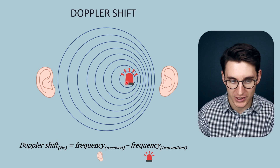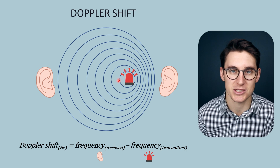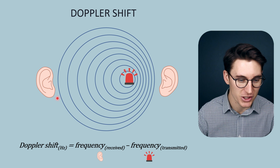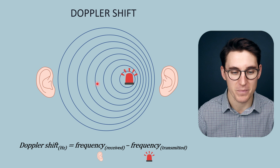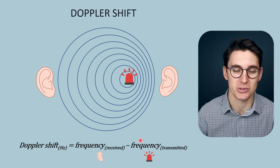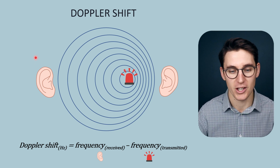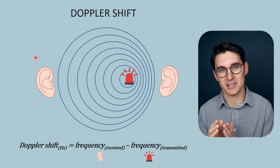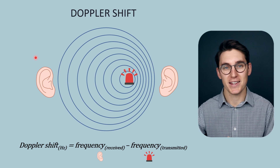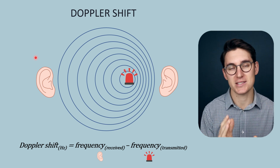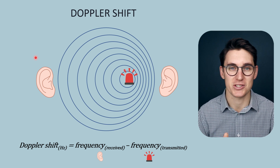Our Doppler shift will be a positive value when the frequency received is higher than the frequency transmitted. The Doppler shift on the other side will be a negative value — our transmitted frequency is higher than the frequency being received. The Doppler shift is a result of the Doppler effect. For Doppler shift to occur, either the source of sound is moving, the receiver is moving, or there is a reflector of that sound moving within the ultrasound field.